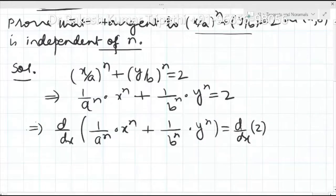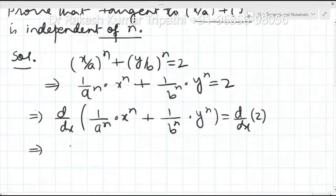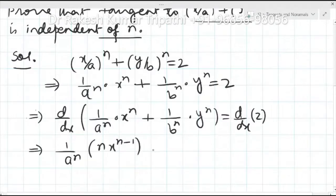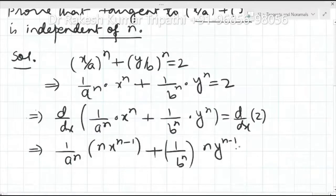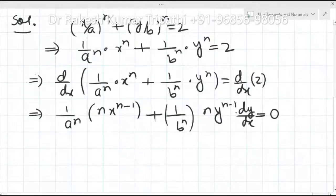Differentiating: 1/a^n is constant, so we take it out — differentiation of x^n gives n·x^(n−1). For the second term, 1/b^n is constant, and differentiation of y^n gives n·y^(n−1)·(dy/dx). The derivative of 2 is 0.